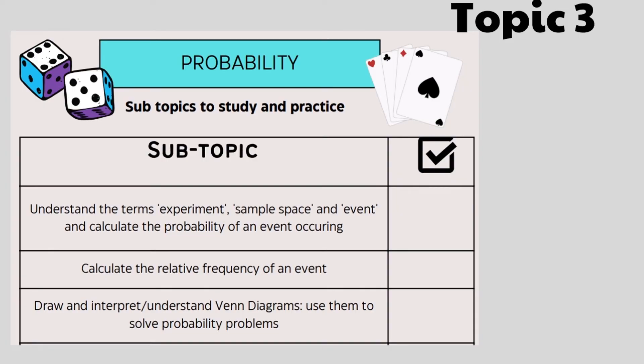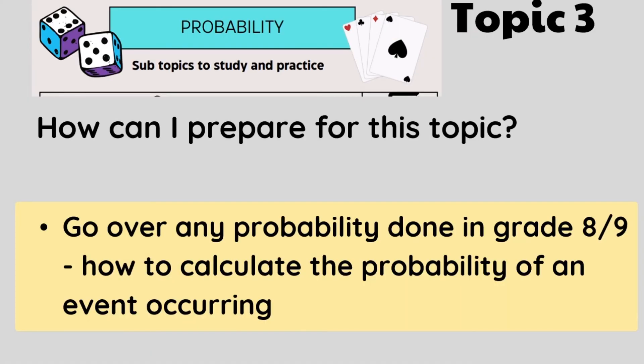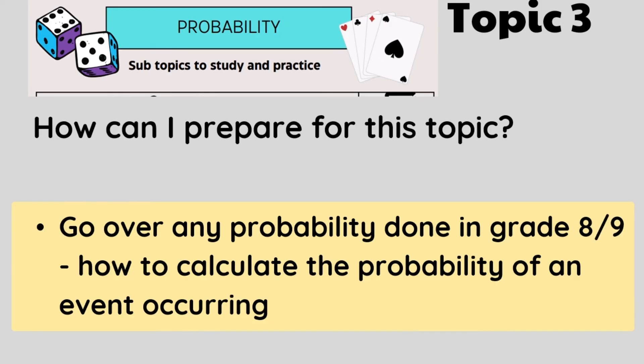Well, if you have done any probability in grade 8 or grade 9, go over that. Or just search on YouTube a very basic video on how to calculate the probability of an event occurring. For example, if you have a dice, go over the probability of rolling a 2 on the dice. The reason why it's a good idea to go through an example before or watch a video on the topic before or read your textbook in advance is so that when you're sitting in class and your teacher is discussing this new topic that you've never done before, the terms are already familiar to you. So immediately, the topic and the work doesn't seem as overwhelming and as scary.